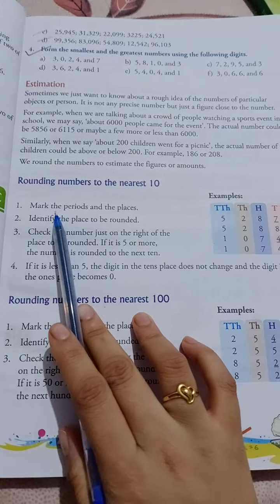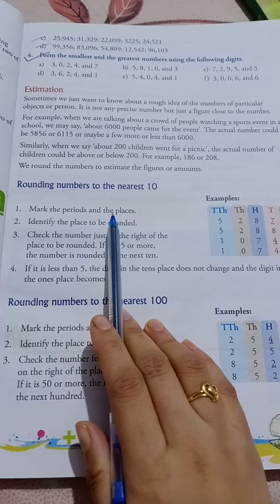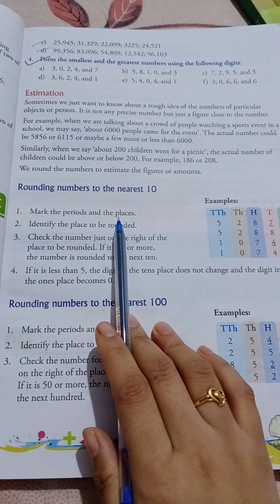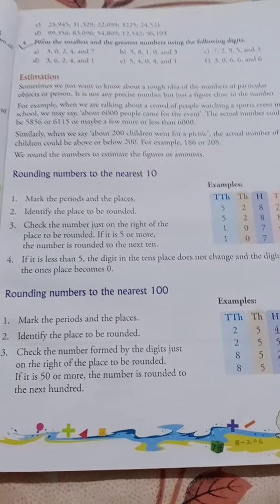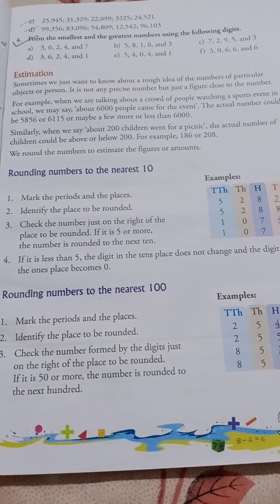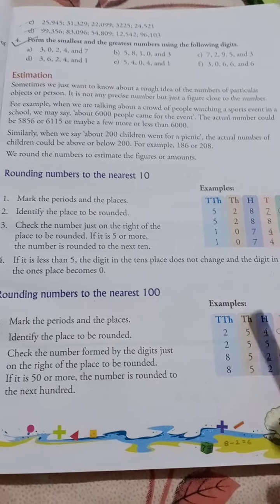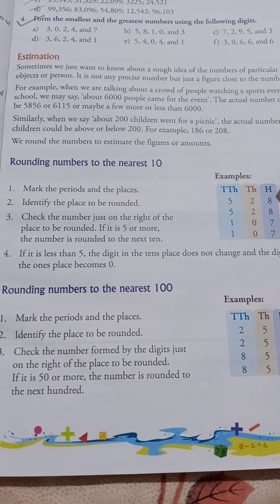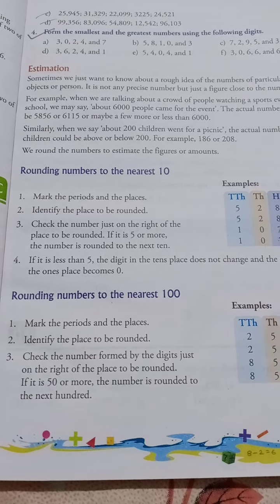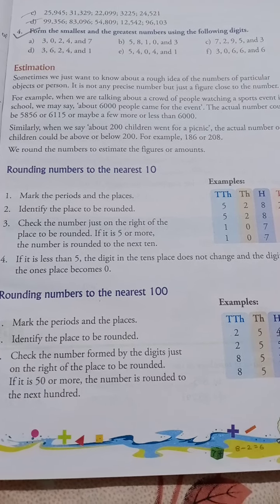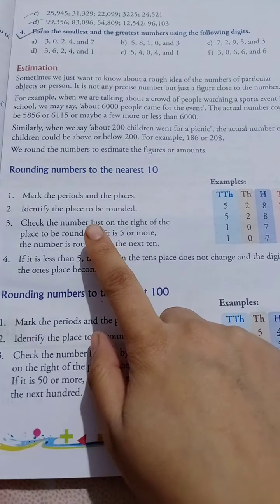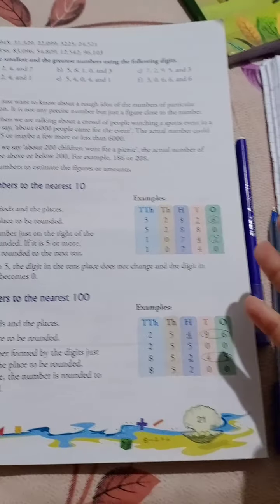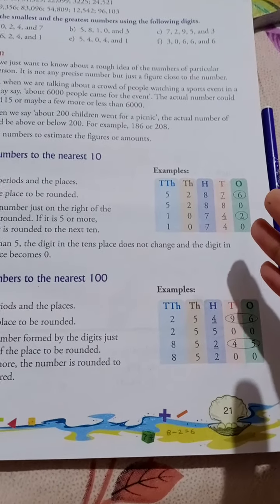First, what do we need to do? Mark the periods and the place. So let's mark the periods — we have to change the hours. We need to mark the periods, and then we need to find the difference.